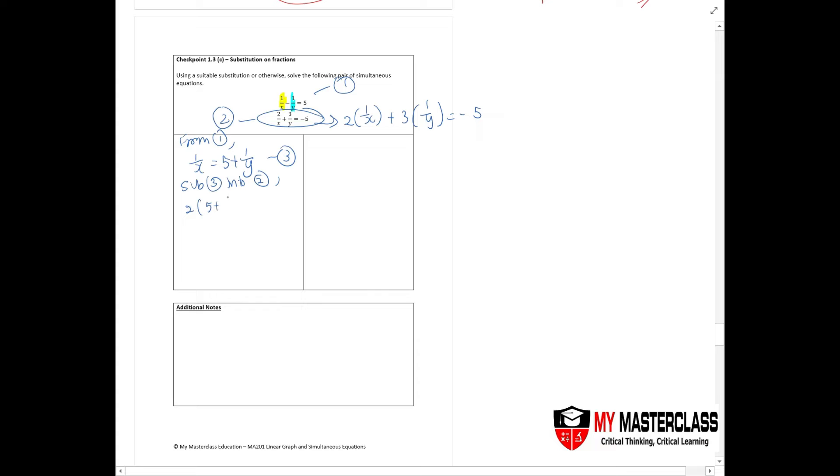So I'll take 2(5 + 1/y) + 3(1/y) = -5. I should eventually get 10 + 2/y + 3/y = -5. Make y the common denominator, so I have 10y + 2 + 3 = -5y. Don't forget the y on your right hand side. Combine your like terms together, you should get 15y = -5.